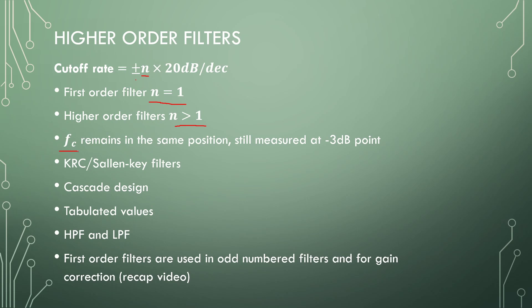The corner frequency that we measure remains in the same position, and we still measure it at minus 3 decibels, no matter what the order is. So to construct this filter, we are going to use KRC or Sallen key filters, and we will design them using filter tables. For this, we can use cascade designs, so you can add a bunch of second order filters and the first order filter to get the response that you want.